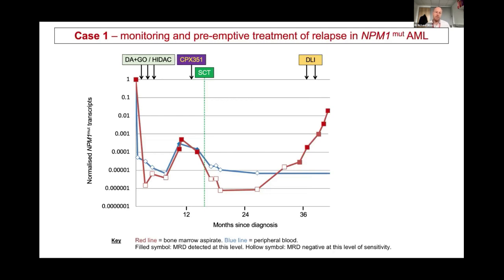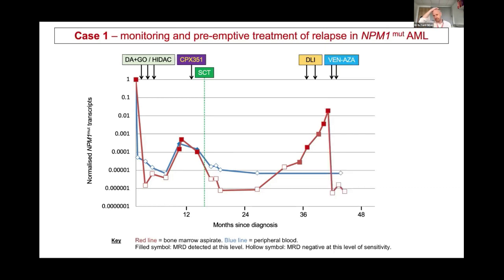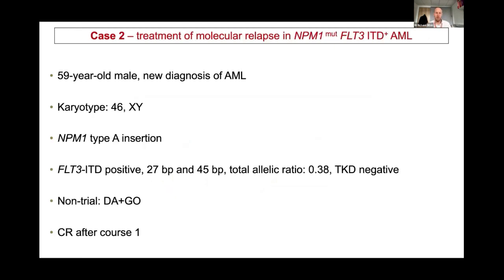In a post-transplant setting you can modify immunosuppression, give donor lymphocyte infusion, which is often effective — it wasn't in this case, with progressively increasing levels. This is an example where you need to know absolute copy numbers to compare with the previous sample to see if there's progression, and also the log reduction between samples to give an idea of the pace of the disease. This patient clearly wasn't responding — up by two logs. Treatment was changed; venetoclax and azacitidine cleared the MRD spectacularly well after a couple of cycles.